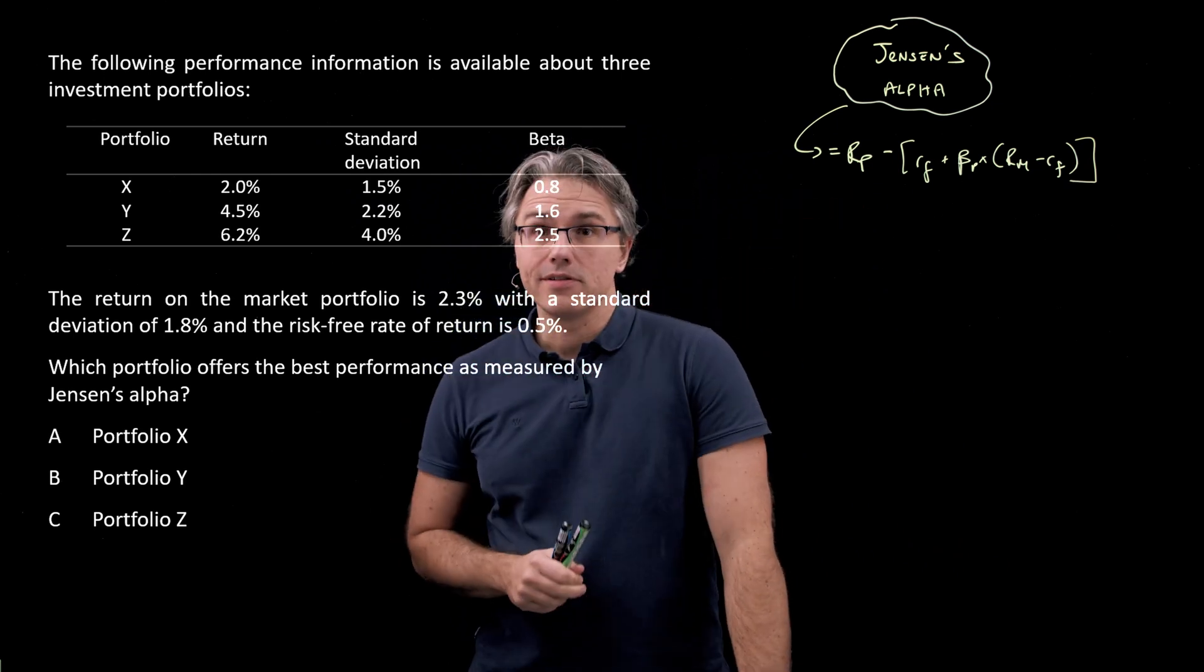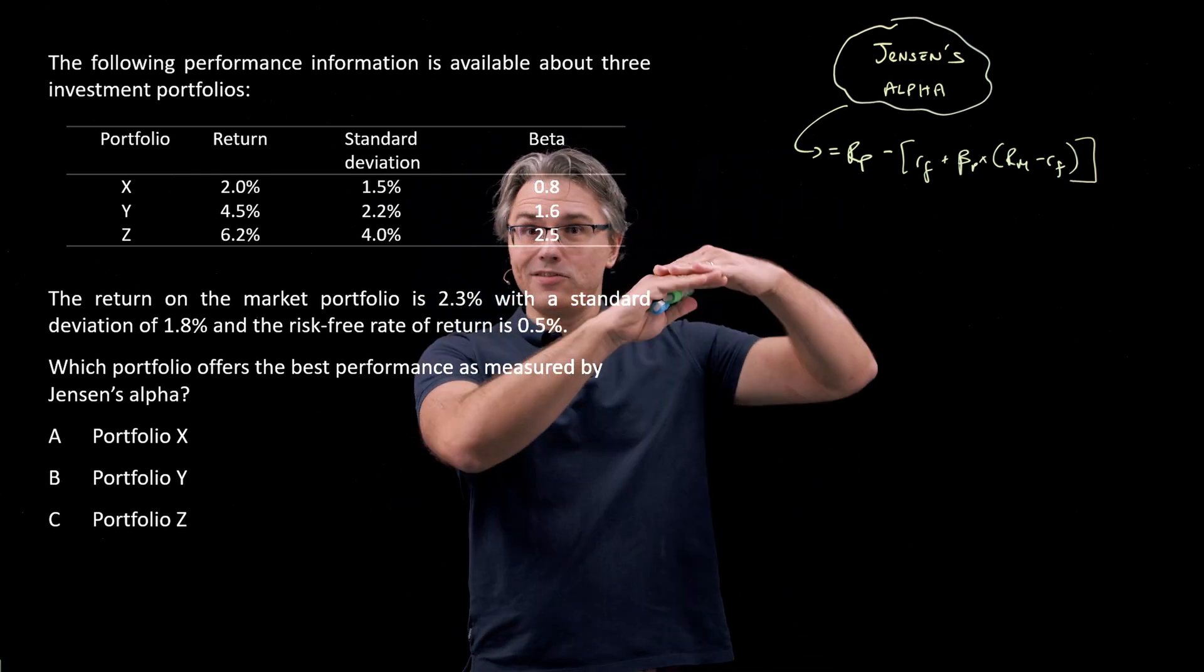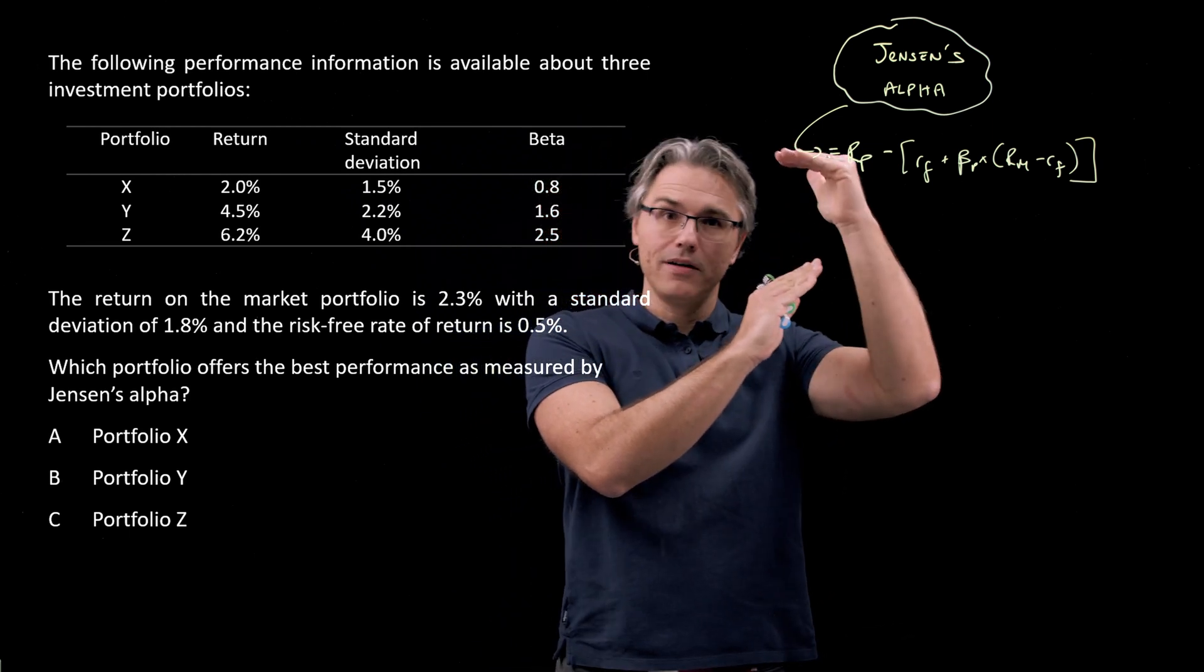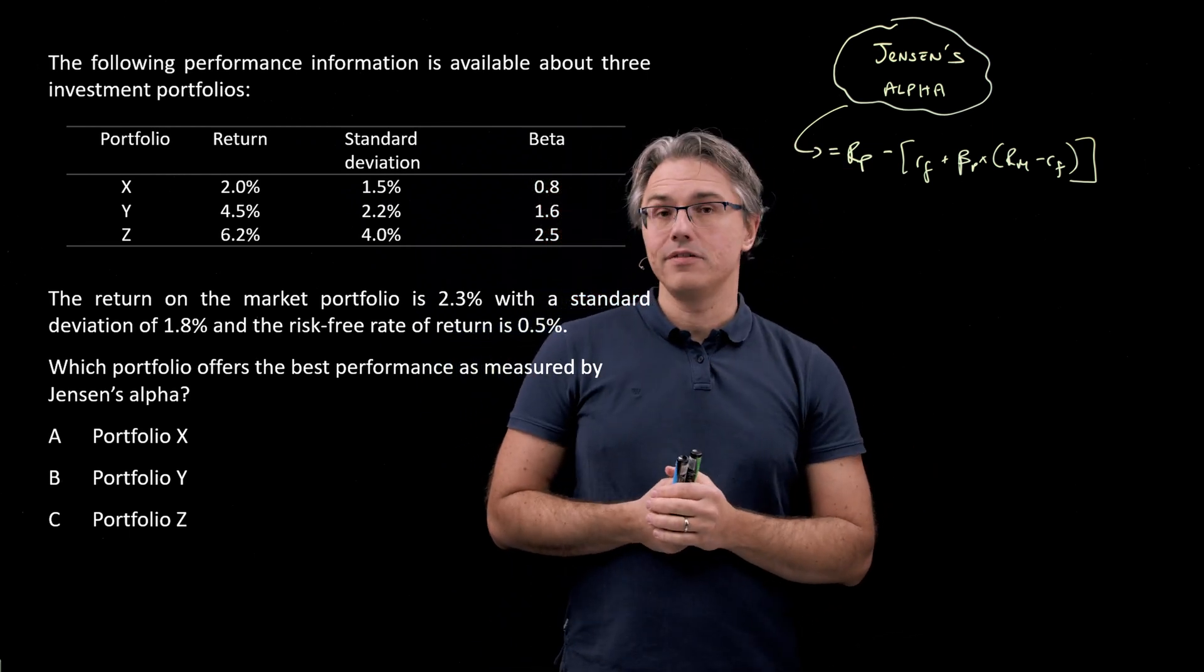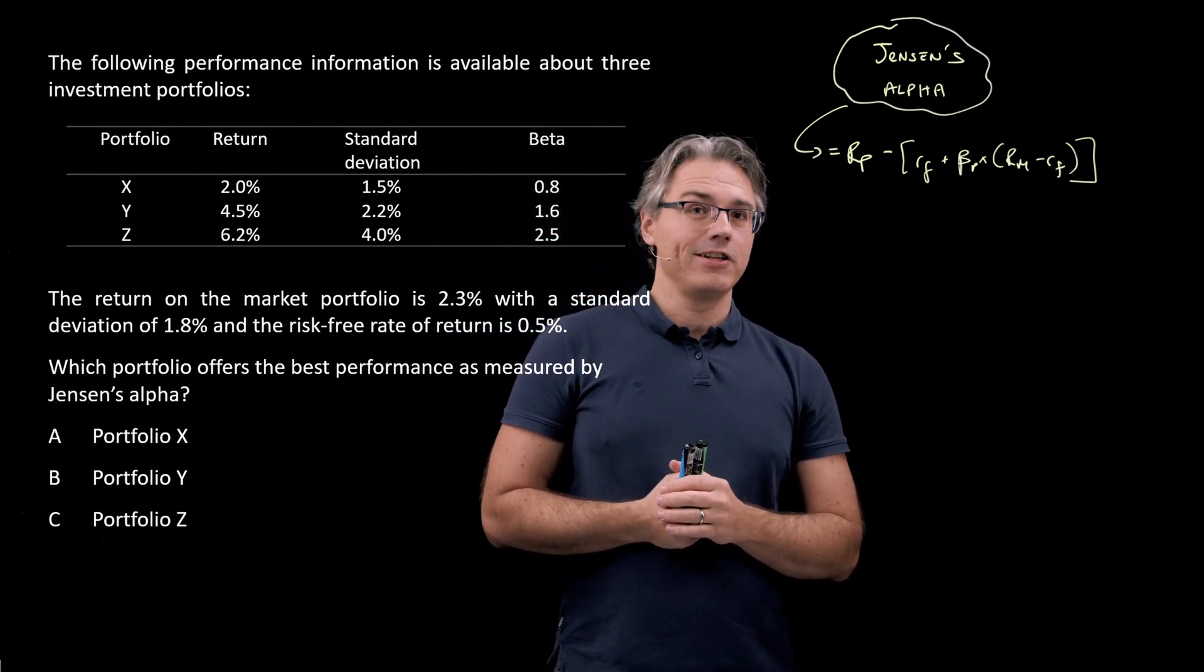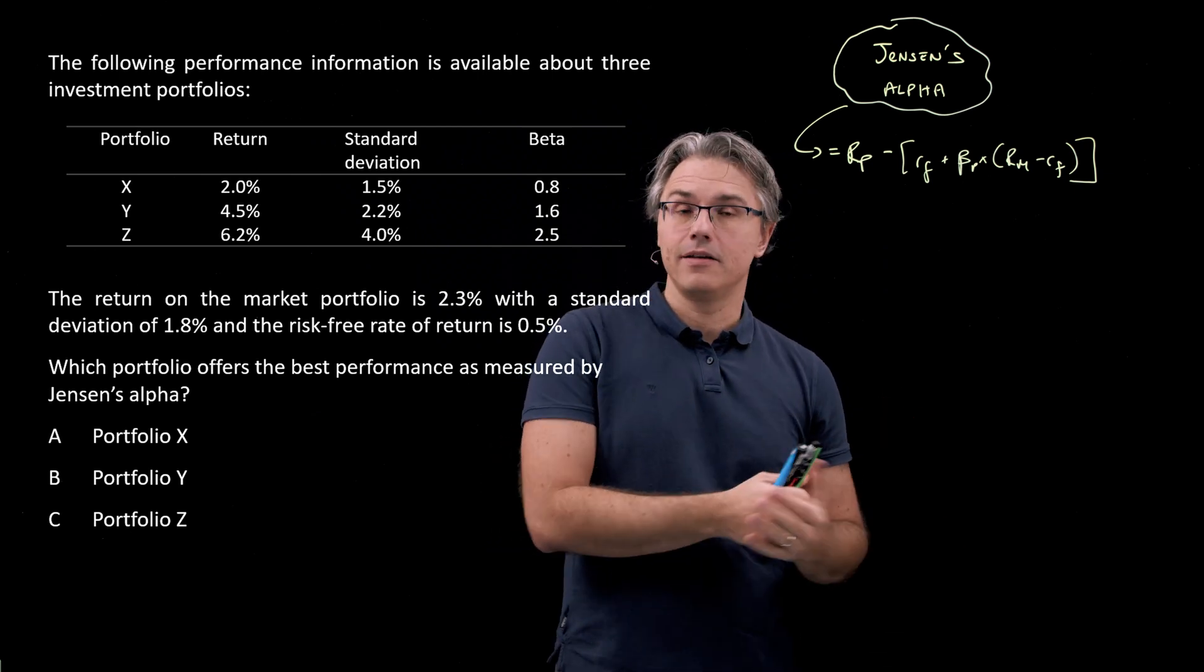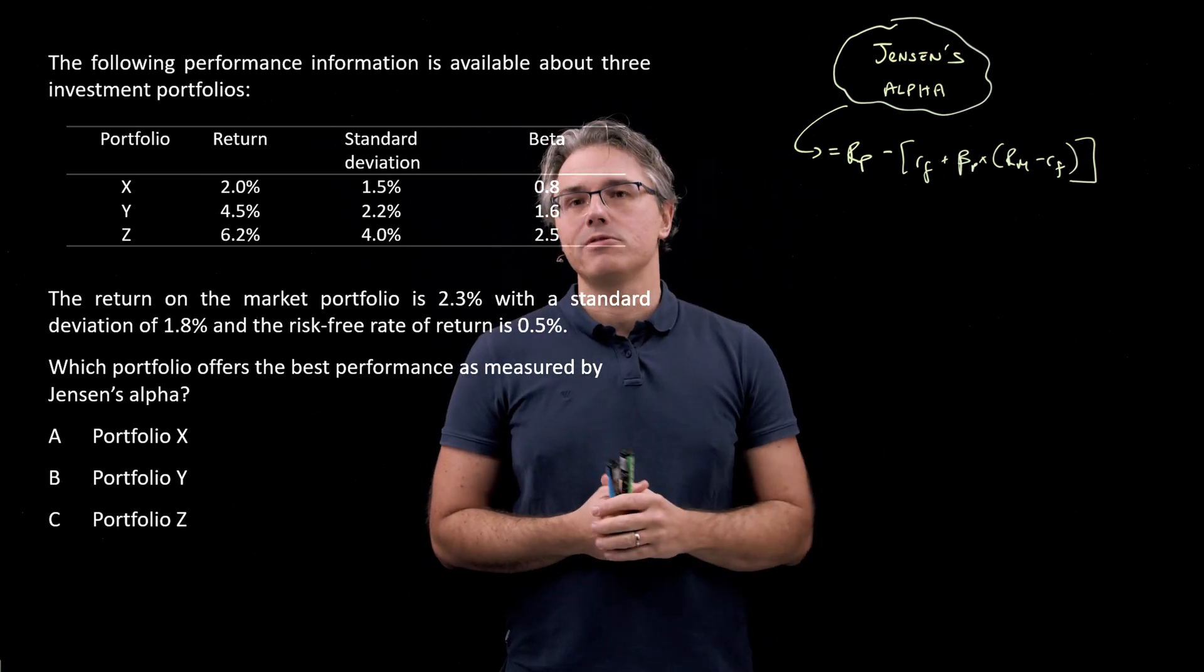Well, if this relationship is positive, then a stock would be described as lying above the SML, the security market line. If the relationship is negative, it's yielding less than what's required.